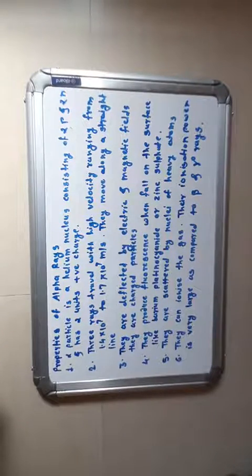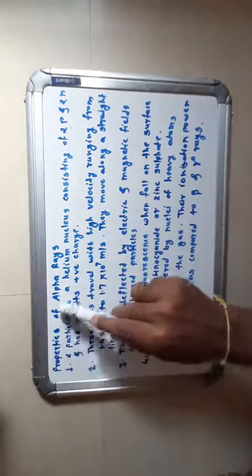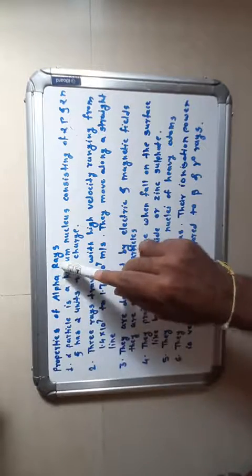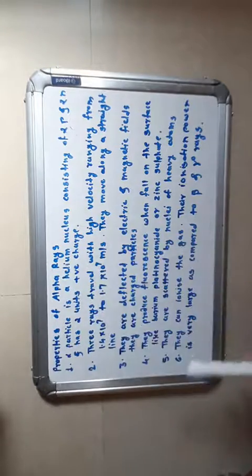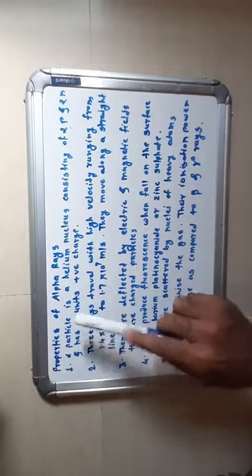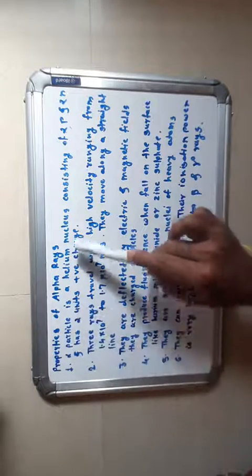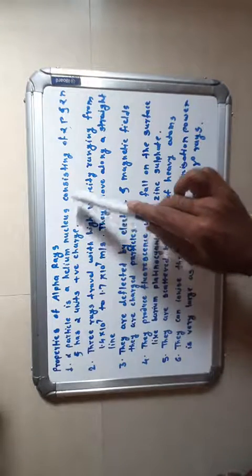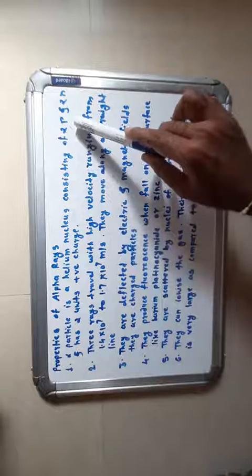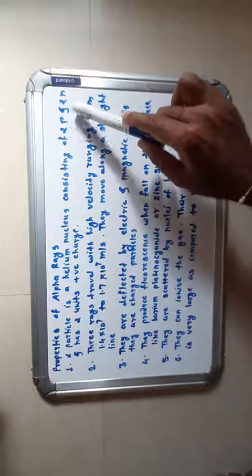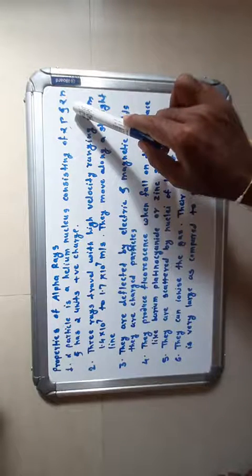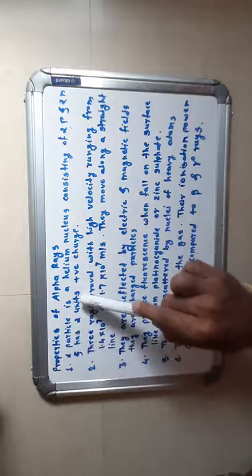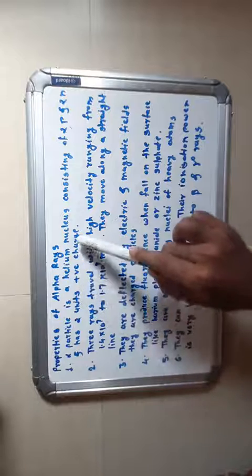Now we discuss the properties of alpha rays. First property: an alpha particle is a helium nucleus consisting of two protons and two neutrons, and has two units of positive charge.